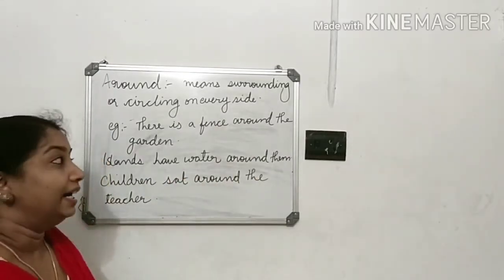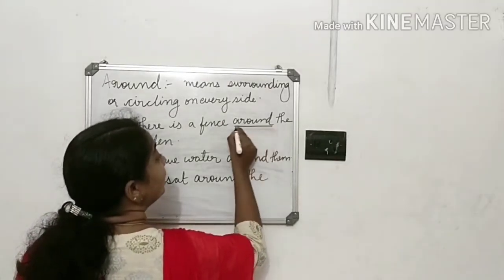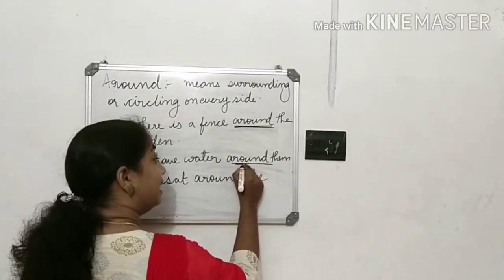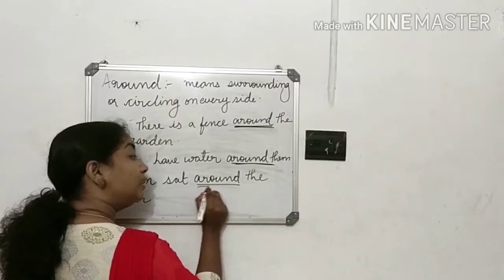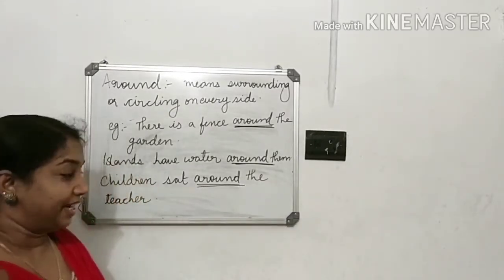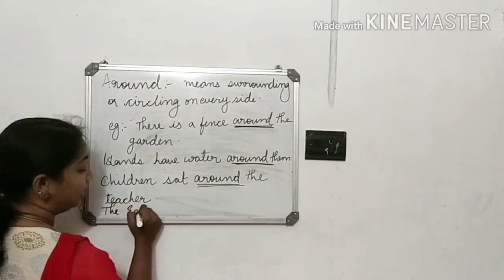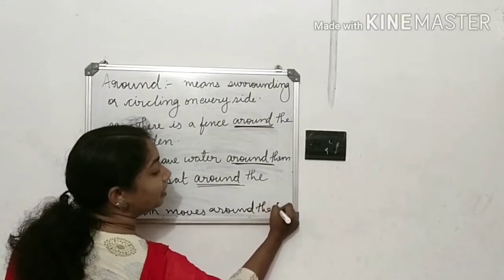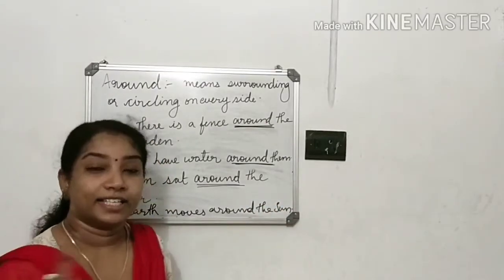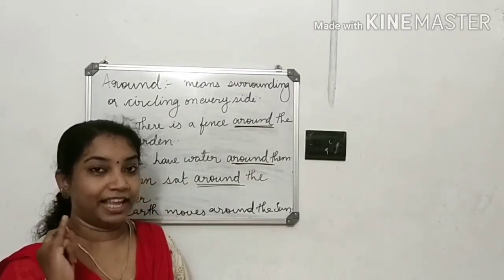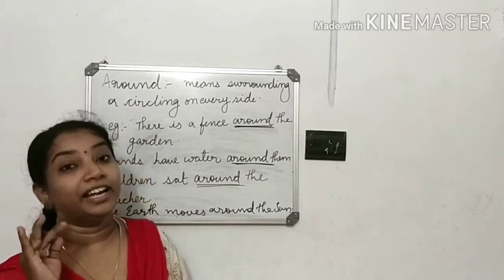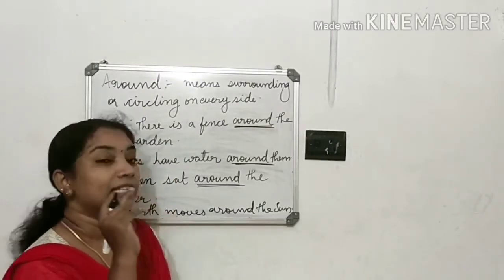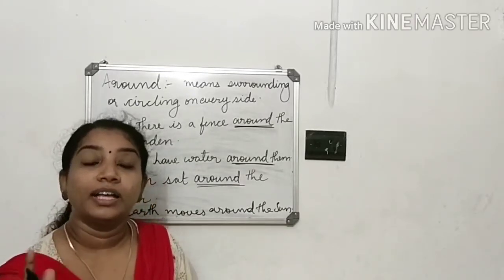To review: There is a fence around the garden — the garden is surrounded by the fence. Islands have water around them. The children sat around the teacher. The earth moves around the sun — the earth is circling the sun. So 'around' means surrounding or circling something or someone.